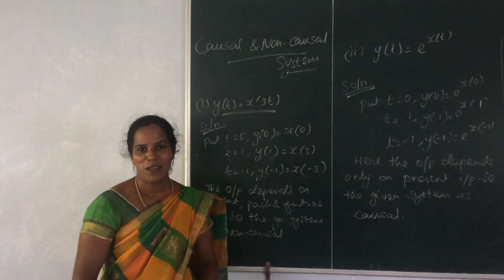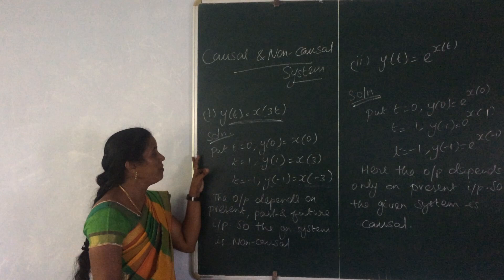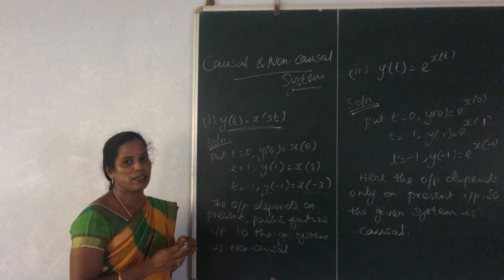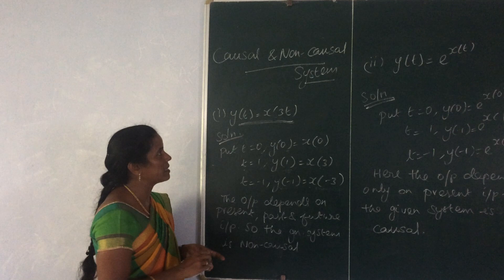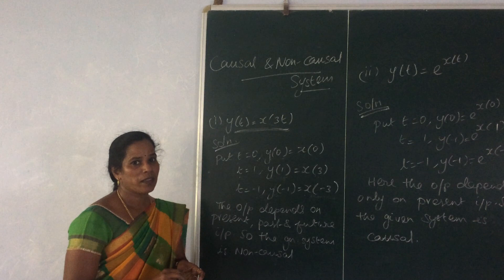Hello everyone. In this video we are going to see how to determine whether the given system is causal or non-causal. First you should know what is a causal system. A causal system means the output at the present instant will depend upon the present input as well as the past input. It is independent of the future input. For a non-causal system, the output is dependent upon the future input also.